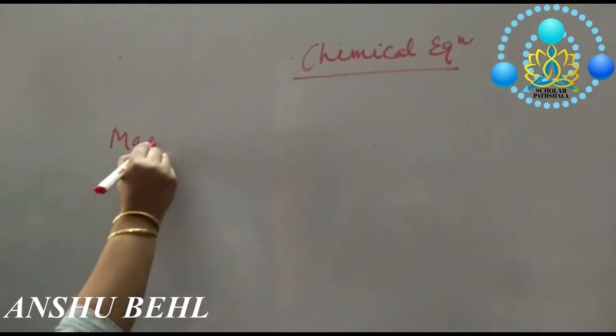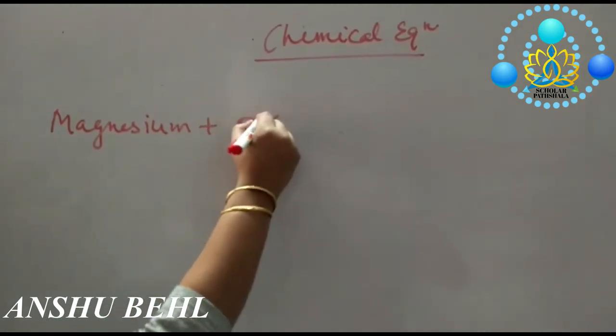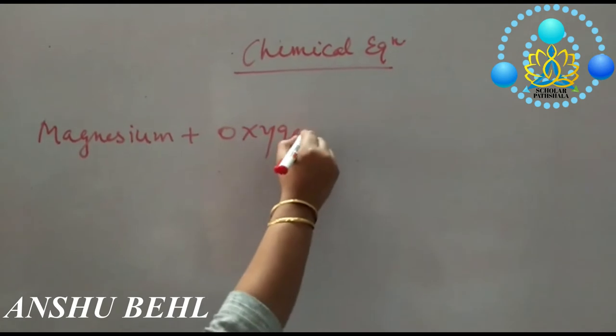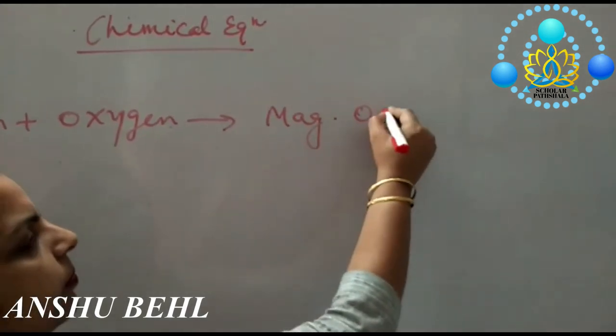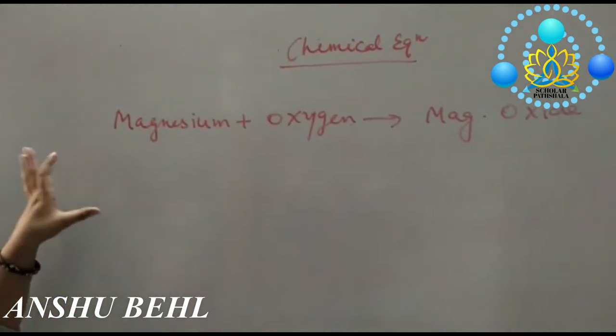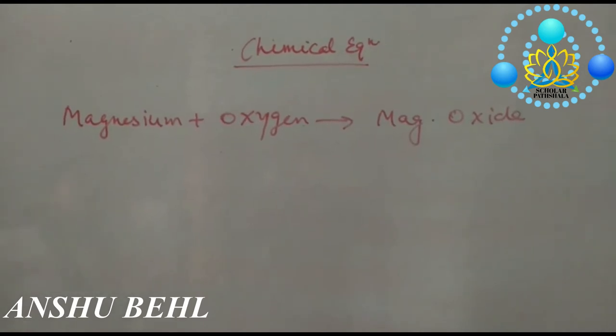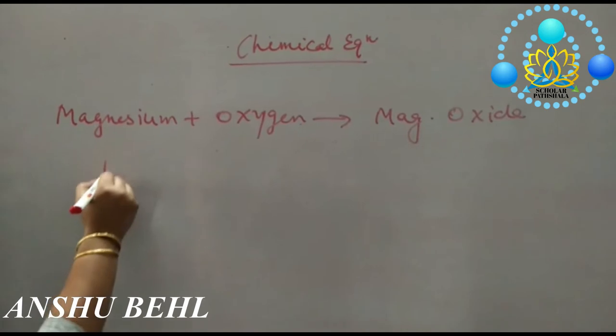When we are saying magnesium ribbon is burnt in presence of oxygen to form magnesium oxide, if you write it in words, it is quite laborious. It takes more time, more energy, and even more space. To reduce all the efforts, we can write it in the form of symbols.